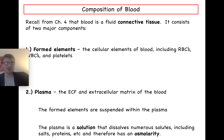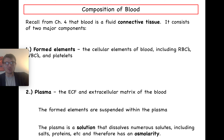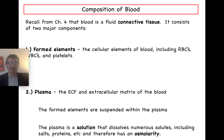The plasma is a solution — a solvent, in this case water, with solutes dissolved within it. Water is always your solvent in biological systems. Solutes include all the different chemical molecules dissolved in that water: salts, proteins, etc. All of those are going to impact the osmolarity of blood. The osmolarity of blood is about 300 milliosmolar.